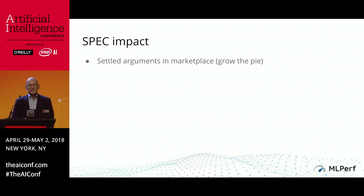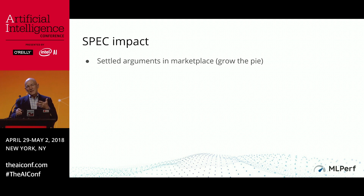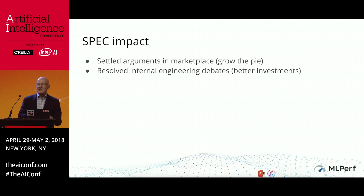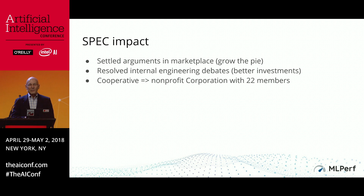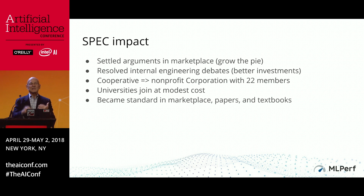What was the impact of SPEC? First, it settled the arguments in the marketplace — you would say here's how fast mine was, and you wouldn't argue about performance, but you could compete on cost or functionality. So the Unix market grew rather than stagnating in argument. It also had a big impact inside each of these companies, because they could decide where engineering efforts should go, leading to better investments. The initial cooperative grew, with many people wanting to join, so they turned it into a corporation with more than 20 members. They kept costs low so universities could participate, and SPEC became the standard for the marketplace, papers, and textbooks.